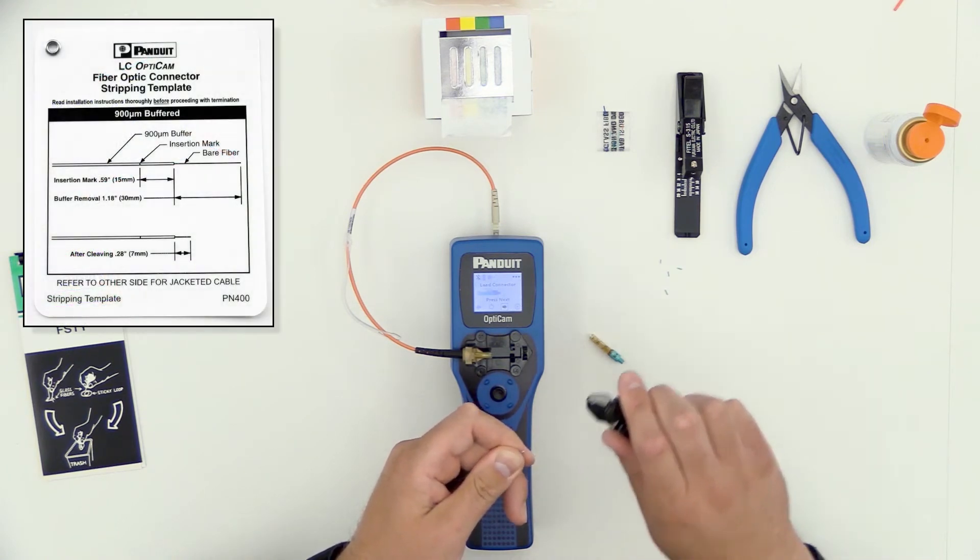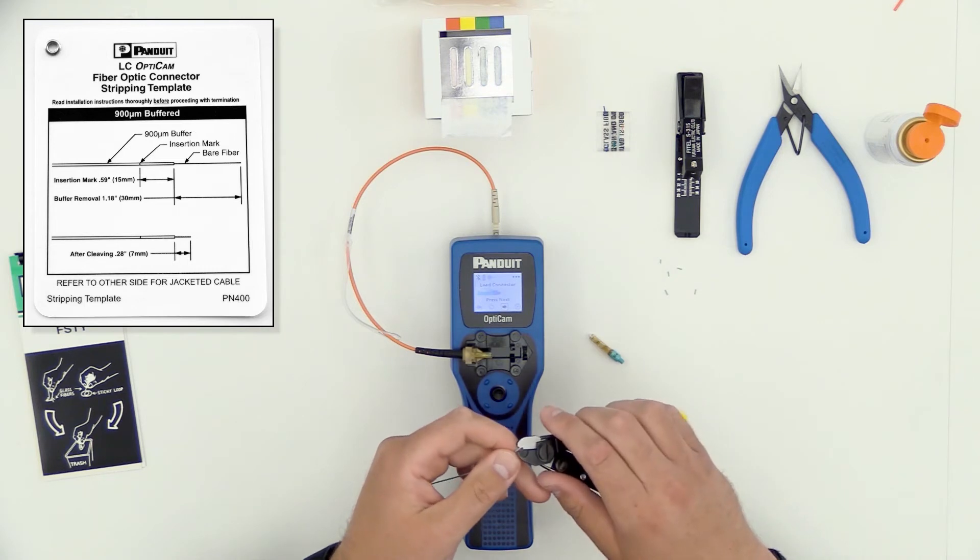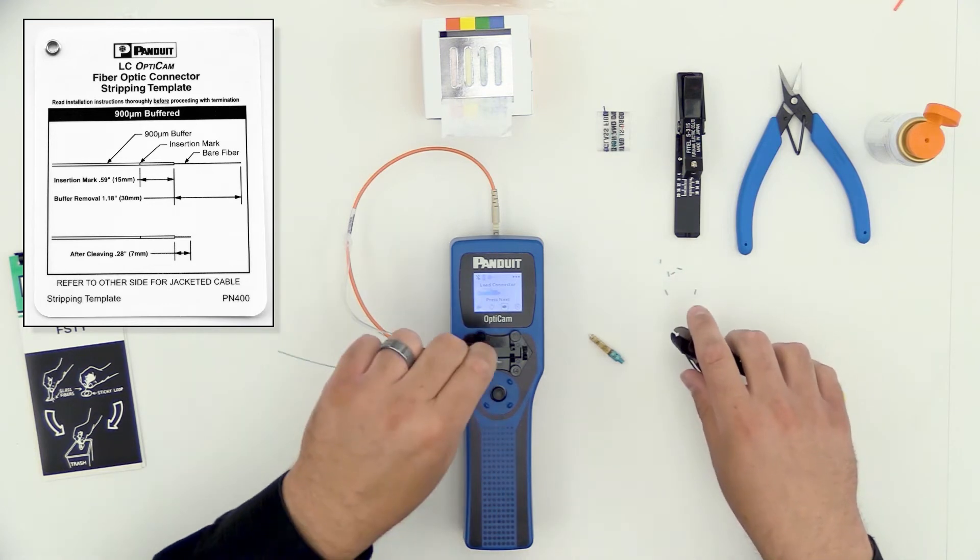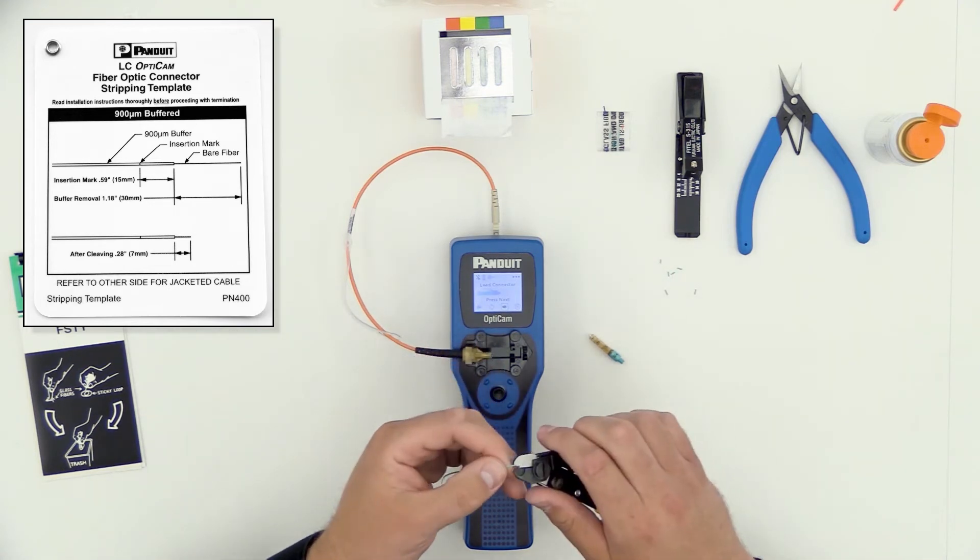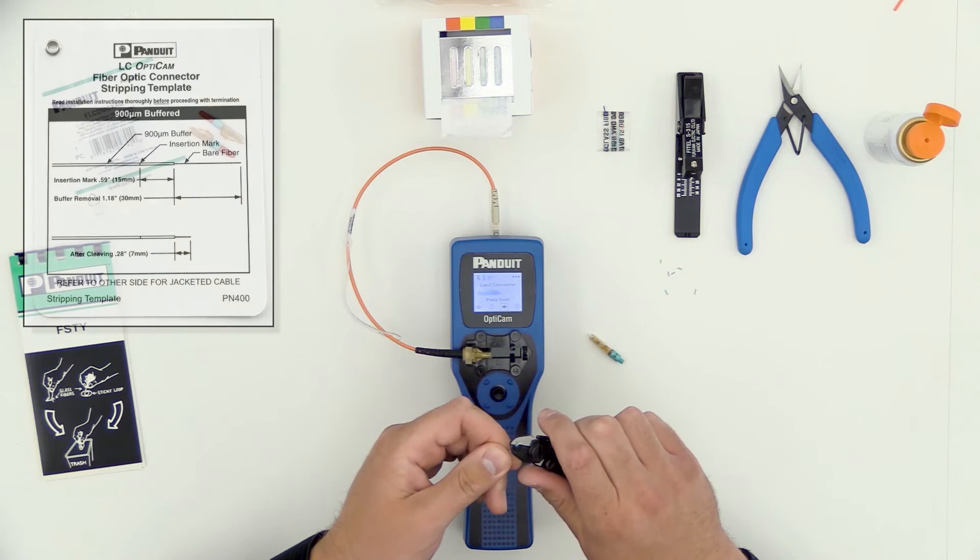There are stripping templates included with all of the OptiCam 2 kits. You can use that to either make a mark on the buffer with the marker or to simply lay your fiber across the stripping template to make sure you've achieved the correct length.